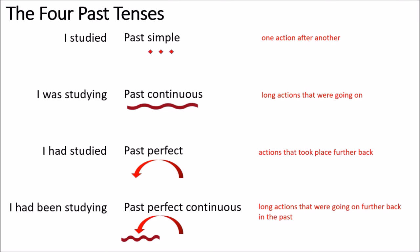So with this you have the four past tenses. The past simple is used to talk about one action after another in the past. The past continuous talks about long actions that were going on in the past. The past perfect talks about actions that took place further back in the past. And the past perfect continuous describes actions that were going on in the past and took a long time — a combination of the two.